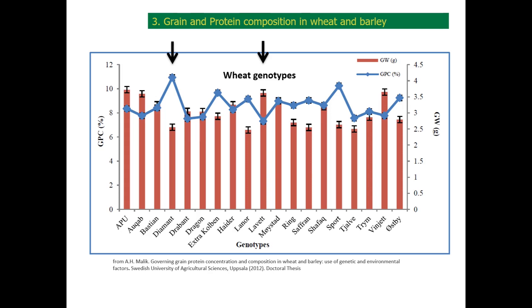For instance, let's look at the genotype Diamant. The grain yield is very low, but the protein content is the highest of the studied genotypes. The opposite pattern can be seen in the genotype Lavette, which has high yield but very low protein content.